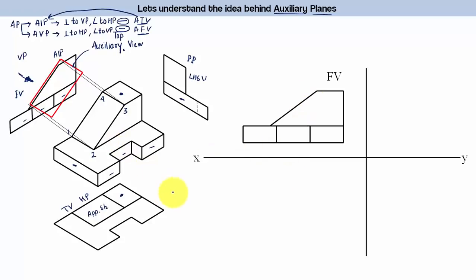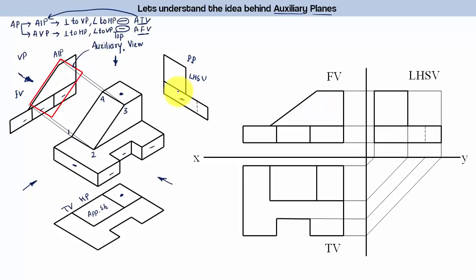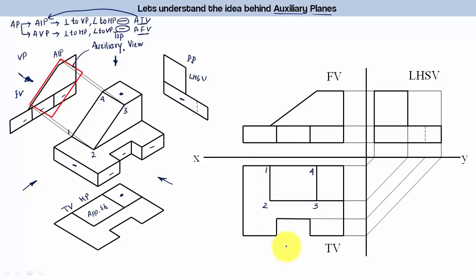Here we have the front view when looking at this object from the front, the top view when looking from the top, and the side view when looking from the side — it looks something like an L-shape. When you speak of this particular inclined rectangle, it appears as a line from the front — its true shape is not visible. To obtain that true shape in a two-dimensional platform is what I'm going to explain right now. Let's label the corners one, two, three, four. From the front, the projector line gives us points one-dash two-dash and three-dash four-dash.